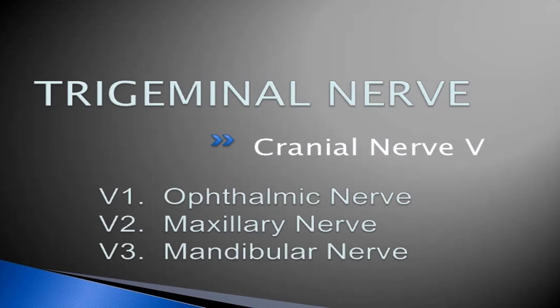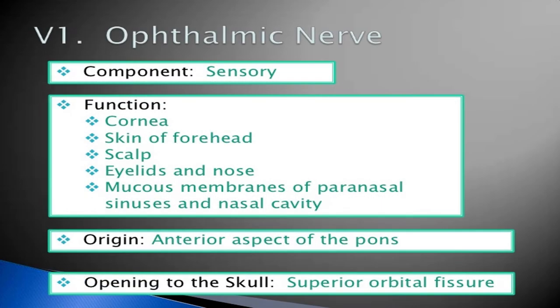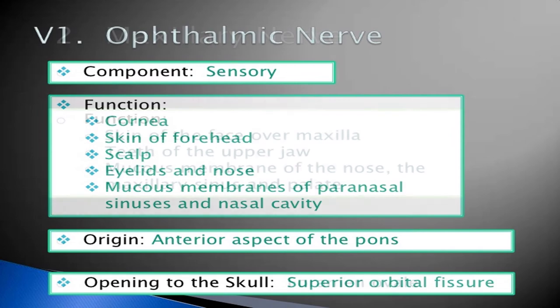The trigeminal nerve is the fifth cranial nerve, divided into three branches — that is why it is called trigeminal. The first branch is ophthalmic, second is maxillary, and third is mandibular. The ophthalmic nerve is sensory. Its function covers the cornea, skin of the forehead, scalp, eyelids, and nose, and the mucous membrane of the paranasal sinuses and nasal cavity. Its origin is the anterior aspect of the pons. The opening of the skull is the superior orbital fissure.